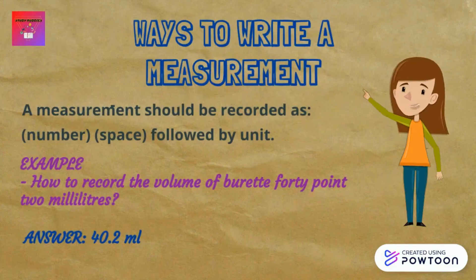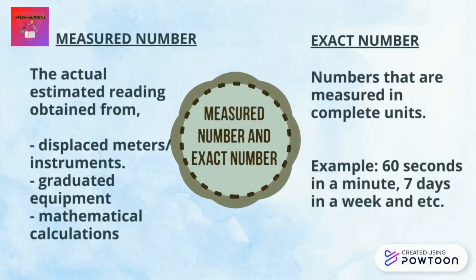Next, we are going to learn how to write a measurement according to the IUPAC system. A measurement should be recorded as a number, a space, followed by the unit. For example, to record the volume of a burette: 40.2 milliliters is written as '40.2 ml'. Measured numbers are the actual estimated readings taken from instruments such as burettes and pipettes, or from mathematical calculations such as average and standard deviation.